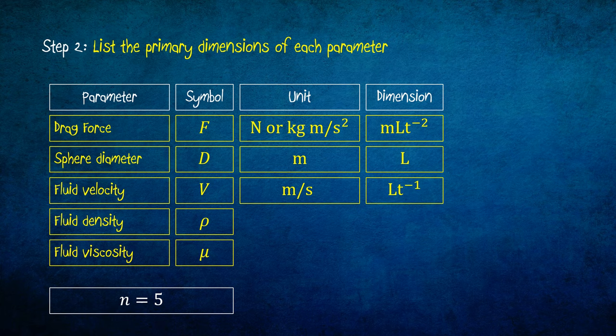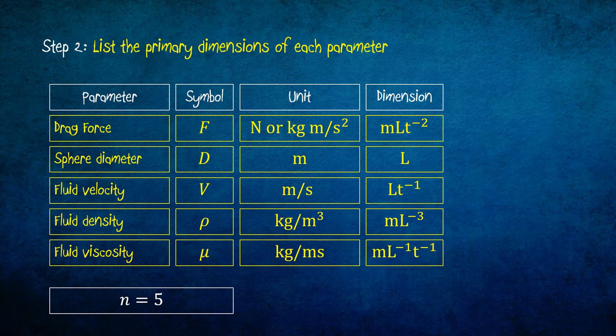The unit for fluid density is kg per meter cube. Then its dimension is mL power negative 3. And, the unit for fluid viscosity mu is kg per meter second. Hence, its dimension is mL power negative 1, t power negative 1.